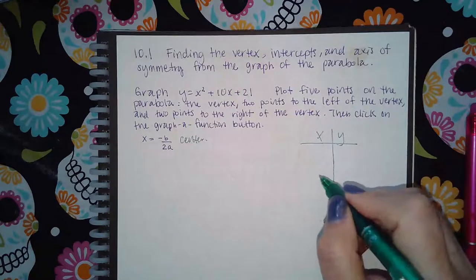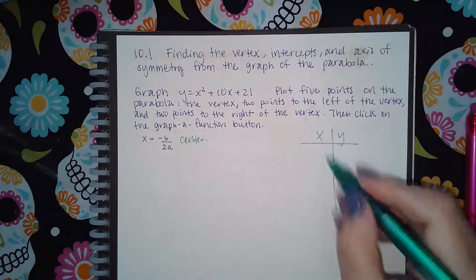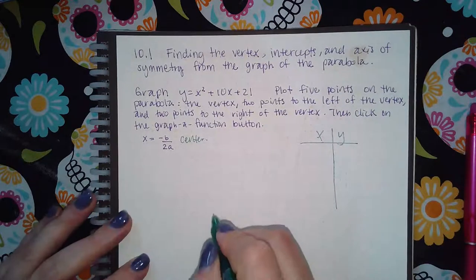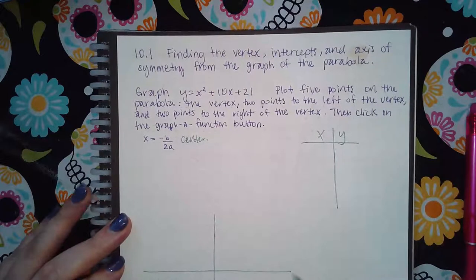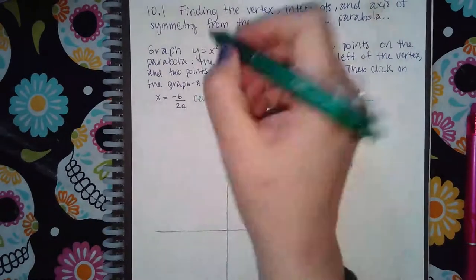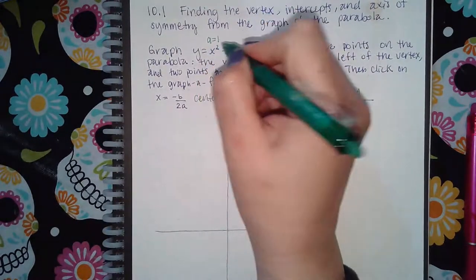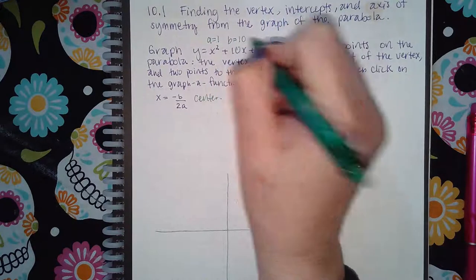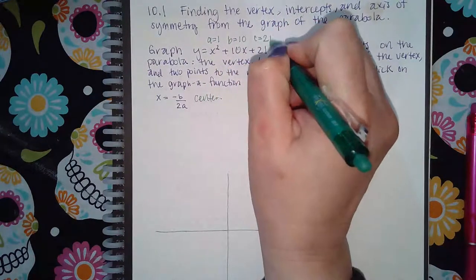With the center here in the middle and then two points to the left and two points to the right. So for instance here, a is positive one, b is positive 10, and c is positive 21.